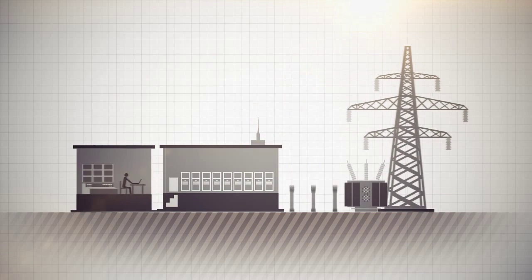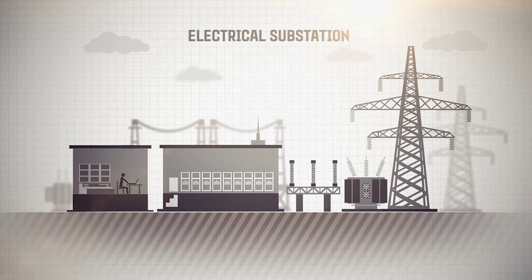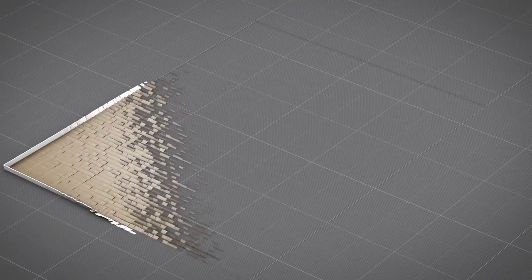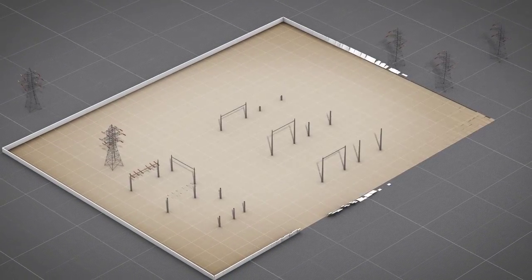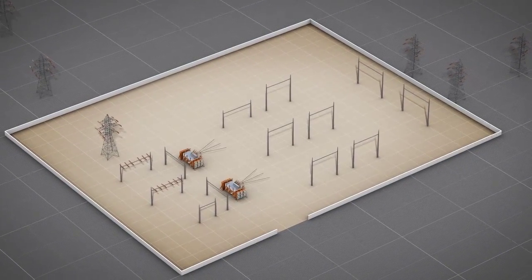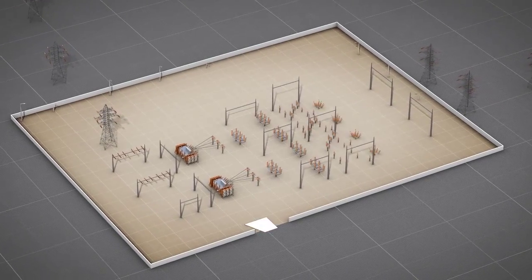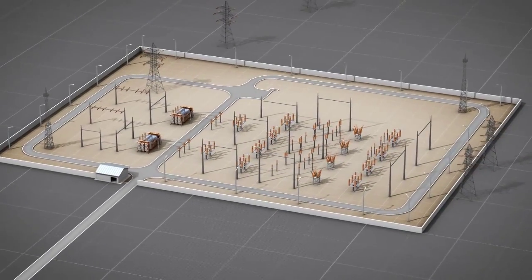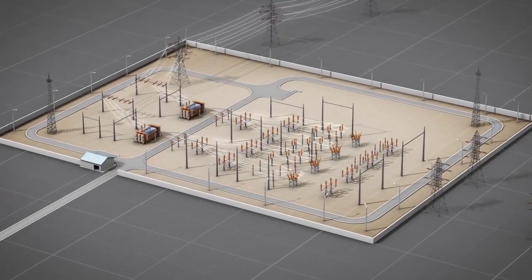Electrical substations are key elements to any power supply system. The basis of any electric substation is power lines, transformers, switches and a switchboard. Its functionality is to receive, transform and distribute electric power to consumers.